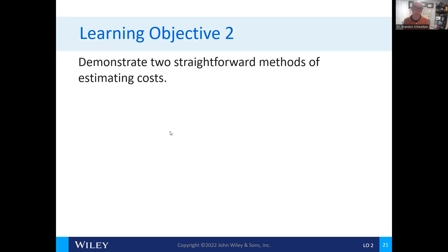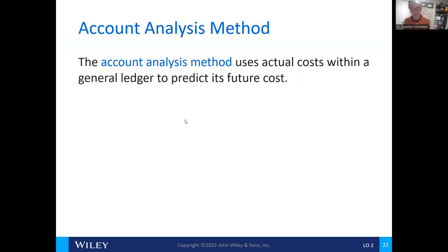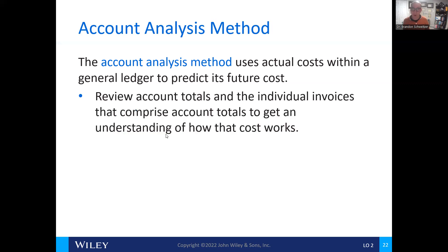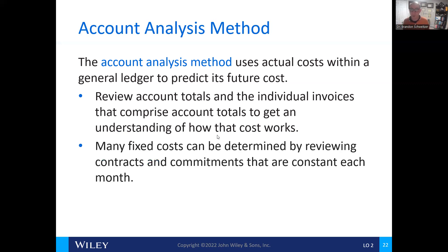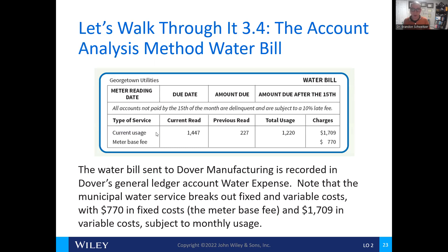There are two very straightforward methods of estimating costs. The first is called the account analysis method. This uses the actual costs within the general ledger to predict future costs. We review the account totals and the individual invoices that make up the total amount of the account to get an understanding of how that cost works. Fixed costs are determined by looking at contracts, commitments, and other constraints each month. Here we have an example of a water bill to determine the future water expense.